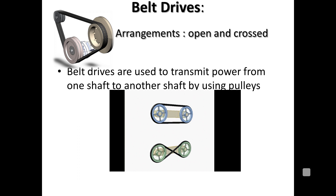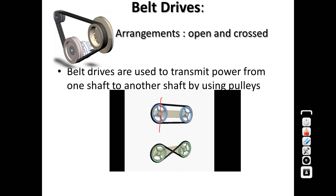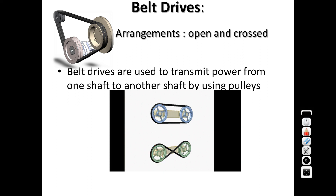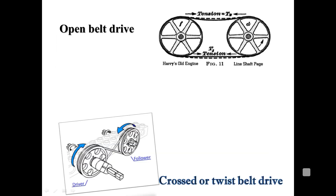One more important difference observable from the diagram is the angle of contact between the belt and pulley, which differs in both arrangements. It is slightly greater in the case of the crossed arrangement. The area of contact between the pulley and the belt is more in the crossed arrangement, which is why friction is a little bit more in the crossed belt arrangement.